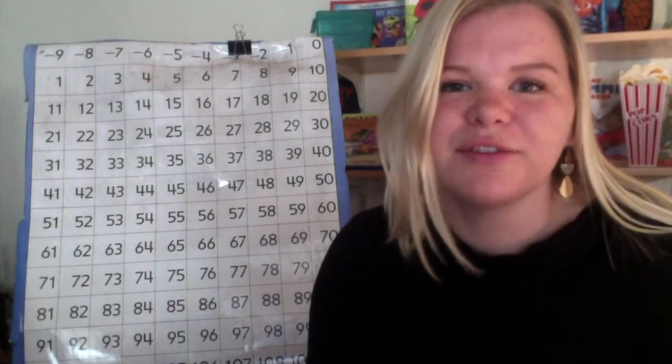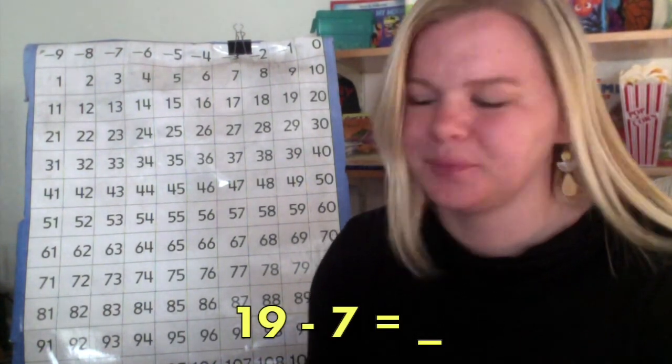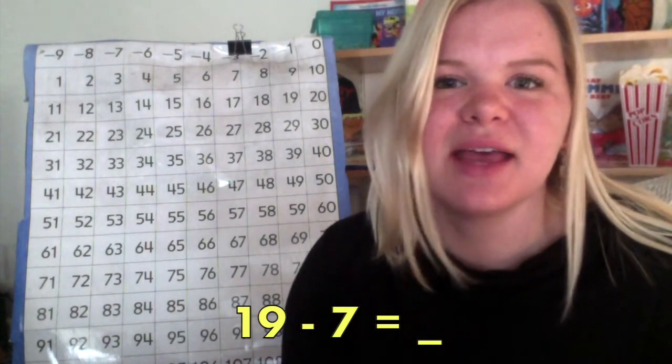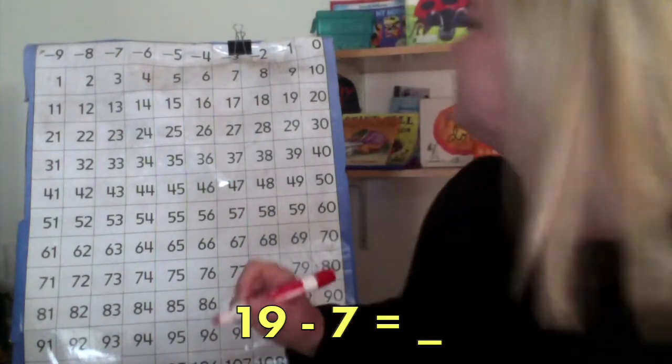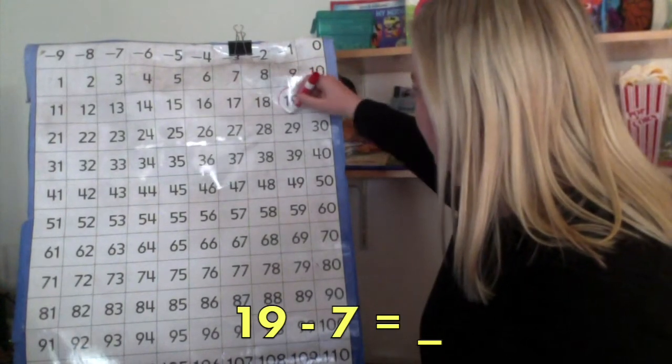Our first subtraction problem is 19 minus 7. So, just like for addition, we first have to find the number we're starting on. Let's find the number 19. Right here.